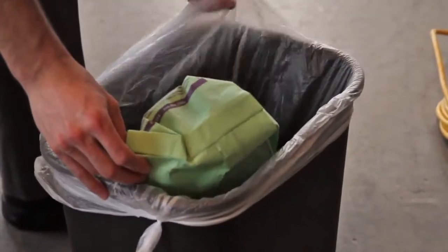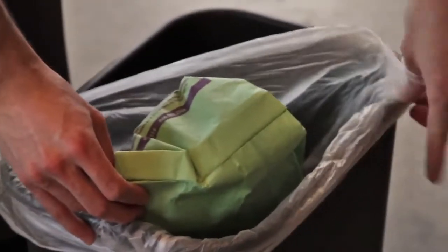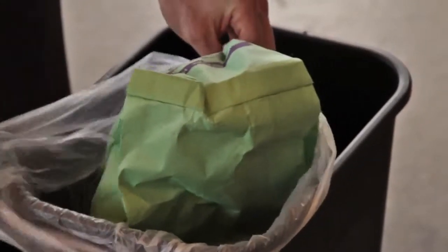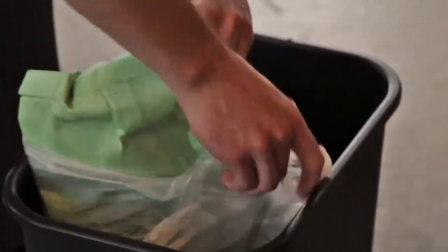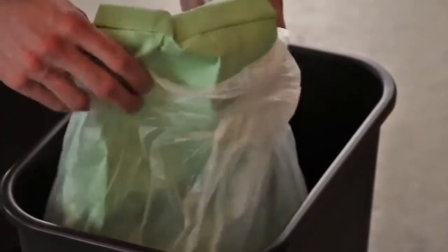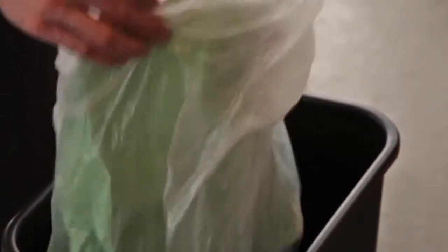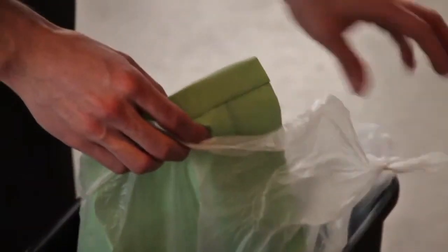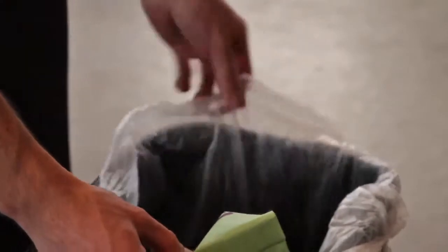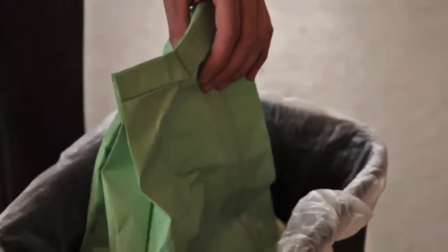When emptying the Intercept microfilter, carefully remove the filter from the vacuum body. Turn the Intercept microfilter upside down into a garbage receptacle that has a plastic liner. Take the garbage receptacle liner and close around the filter opening so that dirt and debris do not float into the air. Gently shake the filter into the garbage receptacle liner until empty.